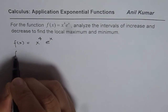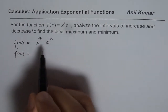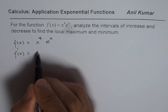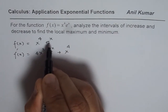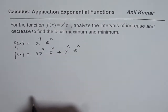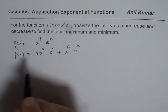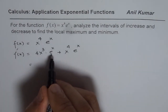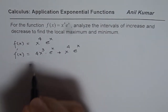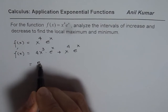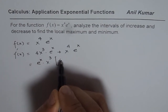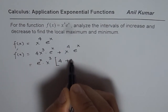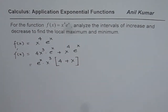For increasing and decreasing intervals we need to find the derivative of this function. We can apply the product rule: 4x³ times eˣ plus x⁴ times the derivative of eˣ, which is eˣ. Now let us factor this — eˣ is common and x³ is common, so we take eˣ · x³ times (4 + x). These are the factors for the derivative.